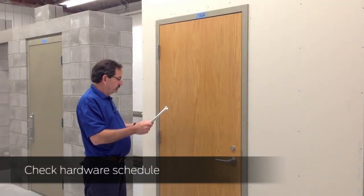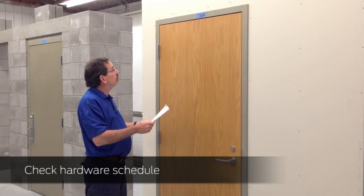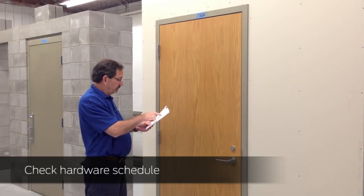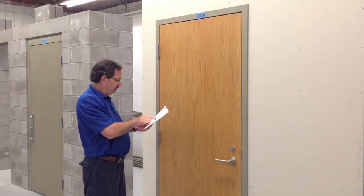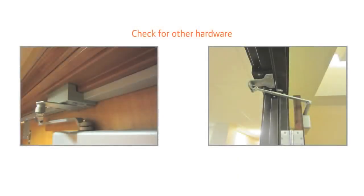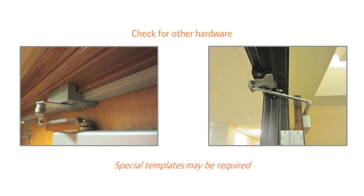If this is a new construction project, check the hardware schedule to confirm you have the correct Closer for the opening. Check the opening for other hardware mounted on the top jam. Items such as a coordinator or overhead holder can affect the installation of the Closer, and special templates may be required.